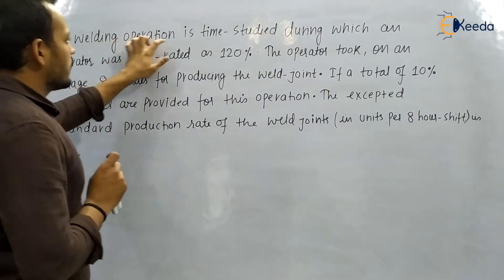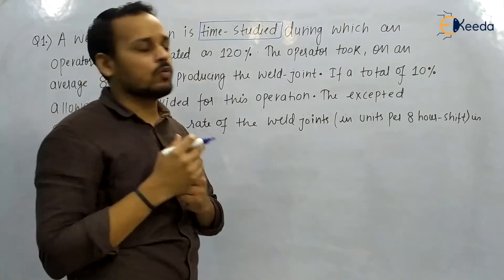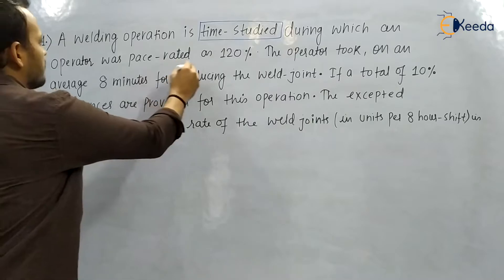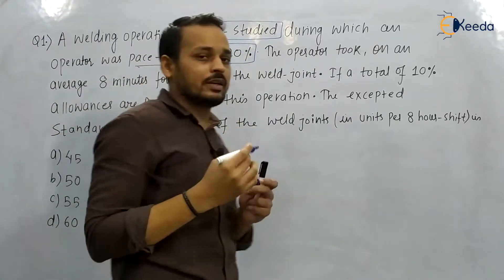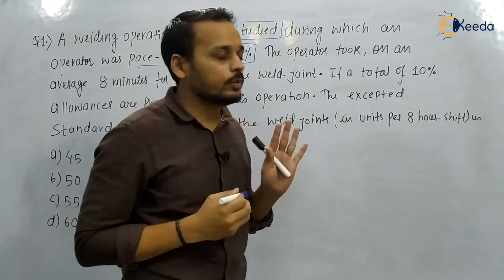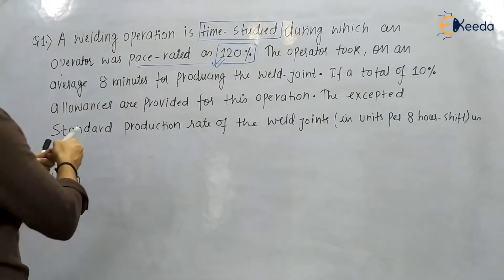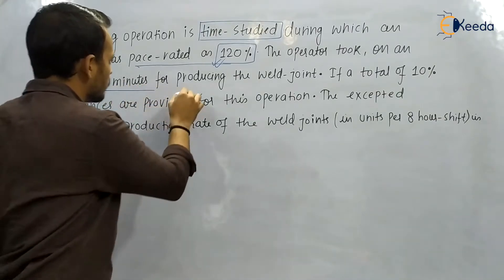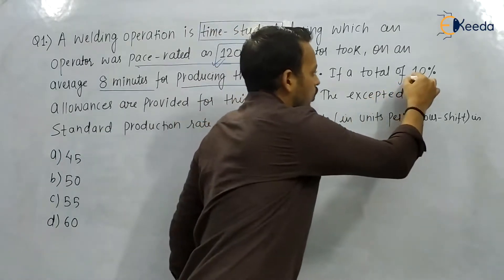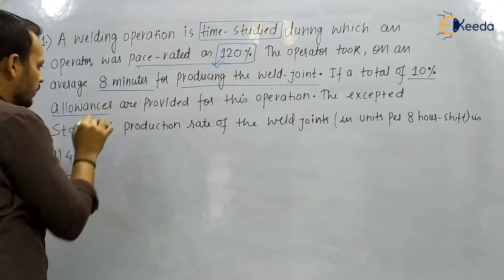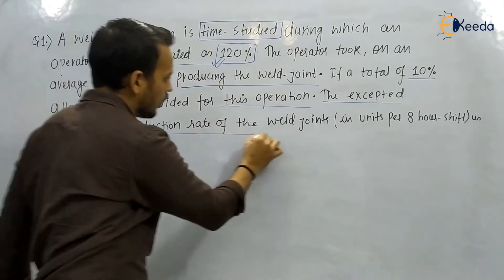A welding operation is time-studied — we are in the chapter time study, which is part of worker study. During the study, an operator was pace rated as 120%, meaning the performance rating or operating factor of the operator is 120%. The operator took on an average eight minutes for producing the weld joint, and a total of 10% allowance is provided for this operation. They are asking for the expected standard production rate of the weld joint.